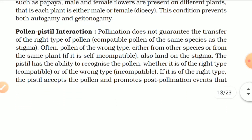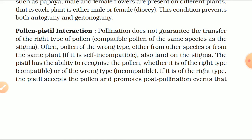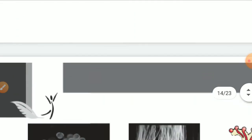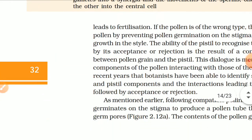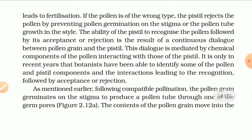Pollination does not guarantee the transfer of the right type of pollen — compatible pollen of the same species — to the stigma. Often, pollen of the wrong type, either from another species or from the same plant if it is self-incompatible, also lands on the stigma. The pistil has the ability to recognize the pollen — whether it is the right type (compatible) or the wrong type (incompatible). If it is of the right type, the pistil accepts the pollen and promotes post-pollination events leading to fertilization. If the pollen is of the wrong type, the pistil rejects it by preventing pollen germination on the stigma or pollen tube growth in the style.